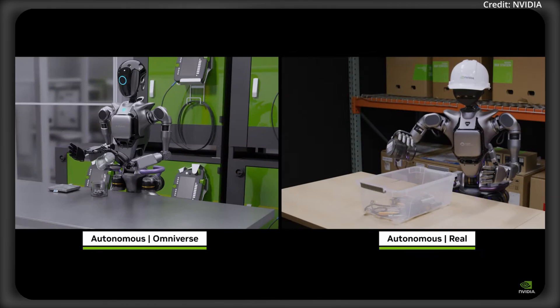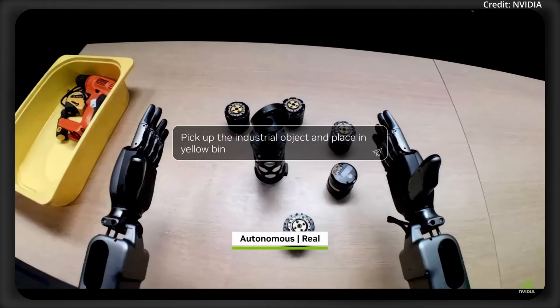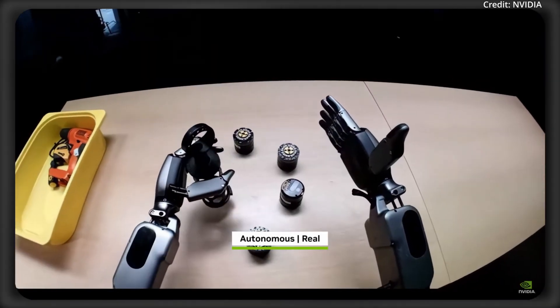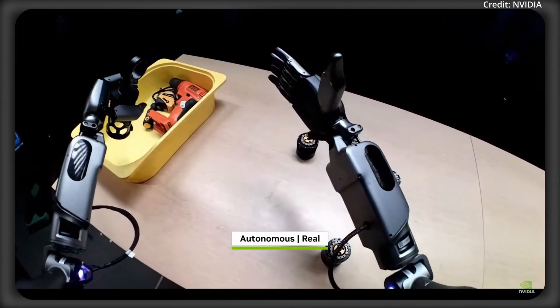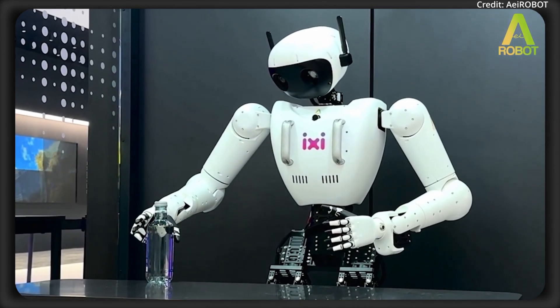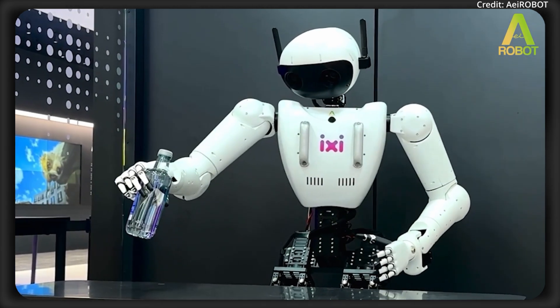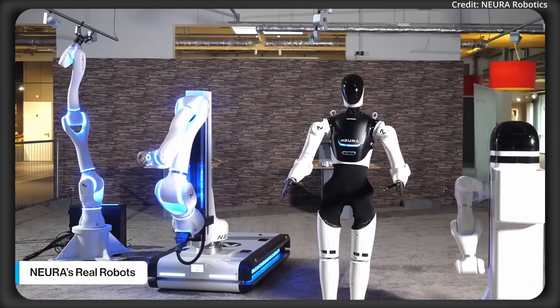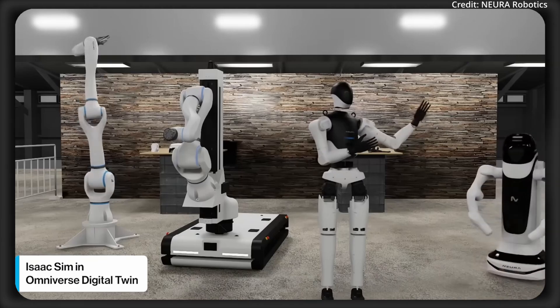Groot N1.5 now adapts much better to new spaces, it recognizes objects via user instructions, and it nails tasks like sorting and storing. And several early adopters like iRobot are already using it to power complex industrial pick-and-place jobs, and Neuro Robotics is using it to explore new home automation techniques.